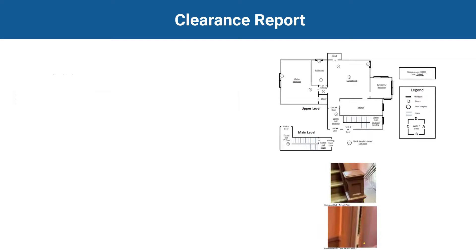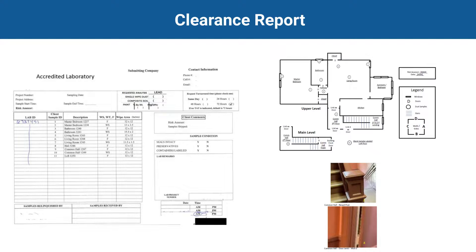The report can include attachments with details on the unit and testing elements, such as a floor plan, images, and reports from the laboratory. The findings in the clearance report are used for HUD grantees to complete a notice of lead hazard reduction activities, which states what was done to address the lead hazards and that the unit passed clearance. The notice is provided to the owner or tenant within 15 days of receiving the report.